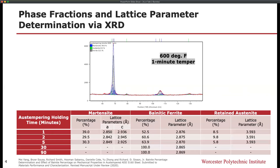As we can see, the amount of bainite continues to increase as the austempering hold time increases, while the retained austenite and martensite decrease. This is expected.